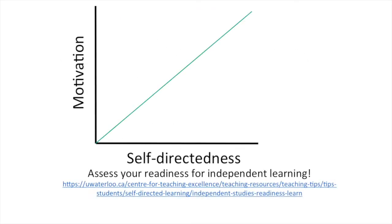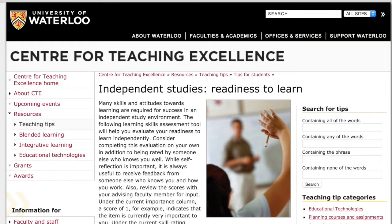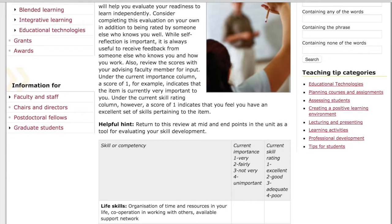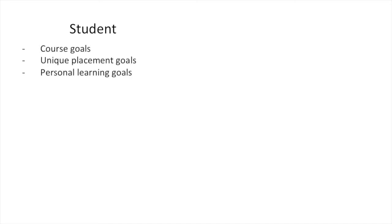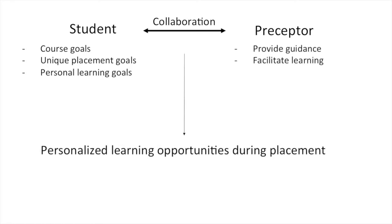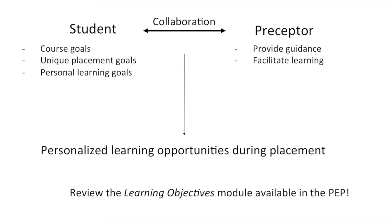Self-directedness in learning and motivation are concepts that have a strong relationship. Students are encouraged to assess their readiness to learn by completing the Learning Skills Assessment Tool from the University of Waterloo's Centre for Teaching Excellence website. An important step in being a self-directed learner is derived from the development of learning objectives. It is essential that the student and preceptor have a well-communicated understanding of course goals and personal learning goals. The Module Learning Objectives is a valuable resource for both students and preceptors, and you are encouraged to review this module.